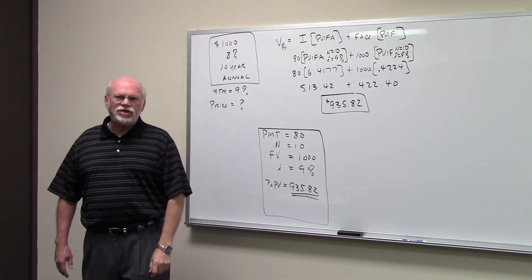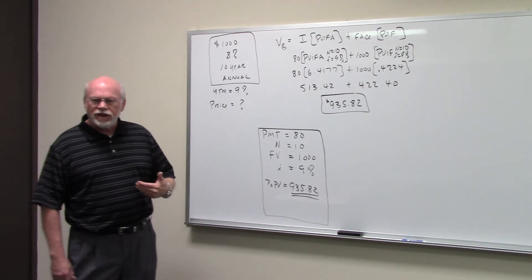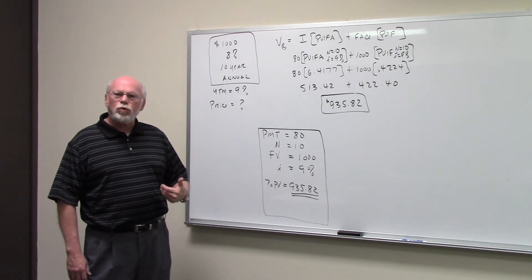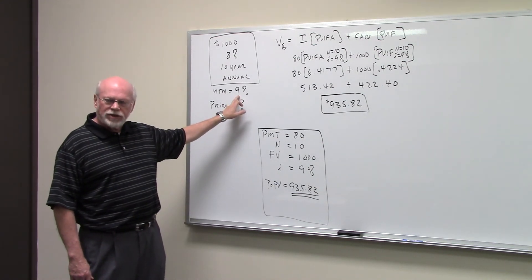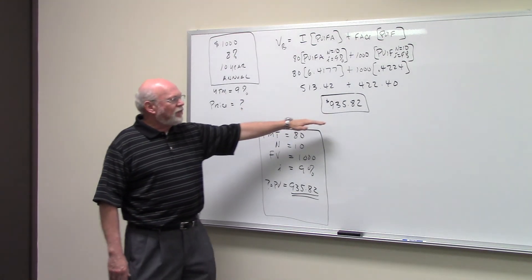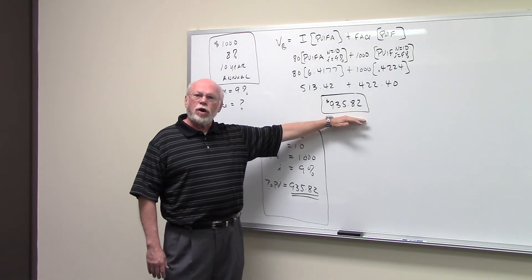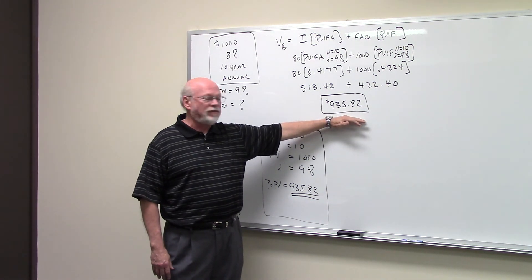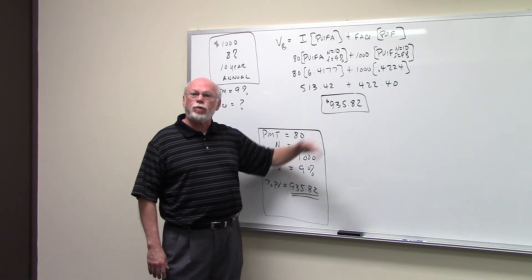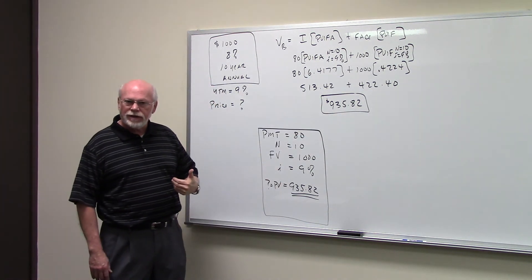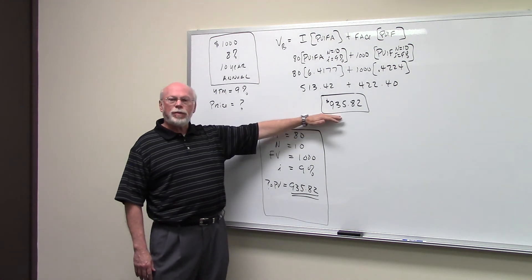$935.82 - this is the intrinsic value of the bond. As an investor, this is the most you're willing to pay for the bond if your required return is 9%. If this bond was selling at a price in the market greater than this number, greater than $935.82, we wouldn't buy the bond.